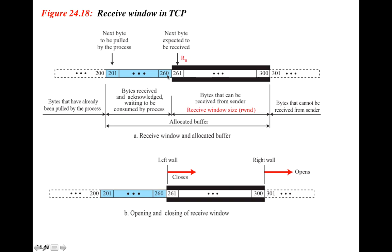These bytes, 201 to 260, have been received and we have sent an acknowledgement for them to the sender. However, the process or application that requested these packets has not taken them yet, so the buffer is not free yet. Even though we have sent acknowledgements for them, we can't release these bytes because we are still waiting for the application to take them. The remaining free bytes mean that if anything comes from the sender — more precisely from 261 onwards — we do have space for them and can place them inside this free buffer space.